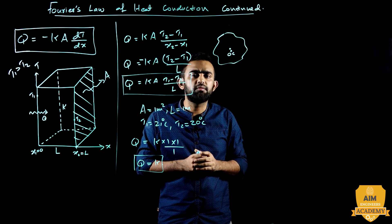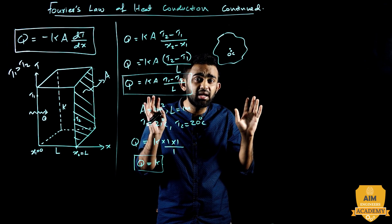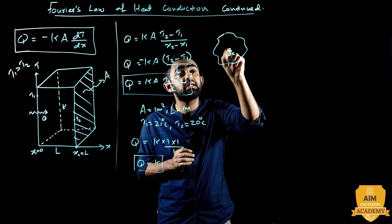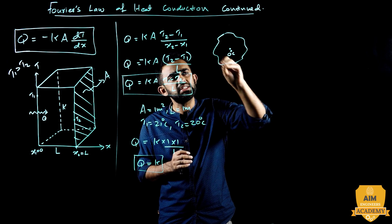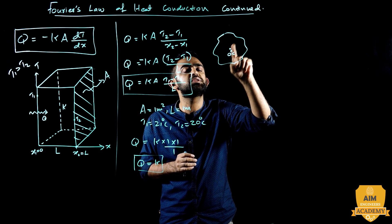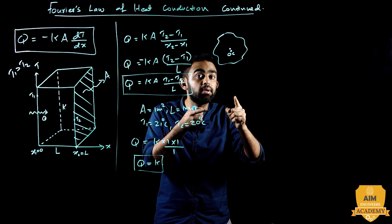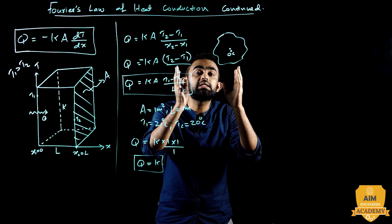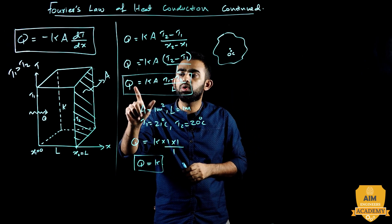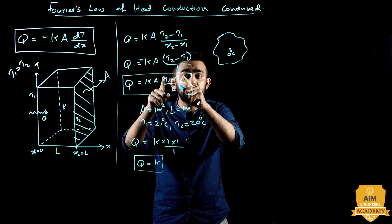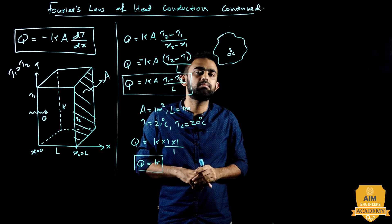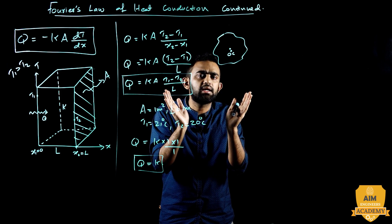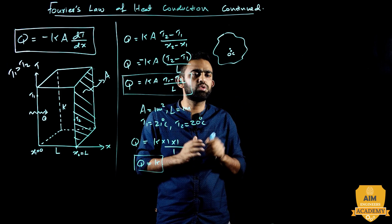You can assume a hypothetical material where K is equal to zero. Practically, no material has zero thermal conductivity, but hypothetically, if K is zero, even a temperature difference of minus 1000 degrees Celsius at one point would not cause any heat transfer to neighboring molecules — because Q equals K times delta T, and if K is zero, heat transfer is zero.